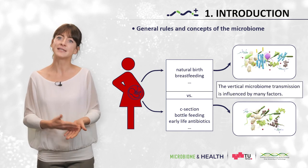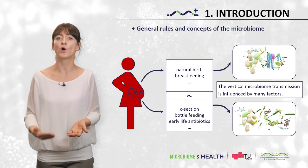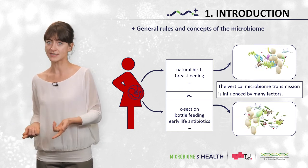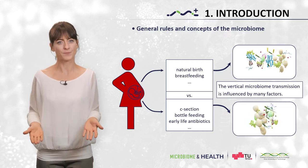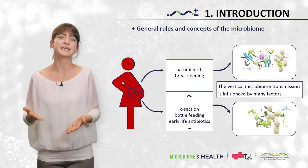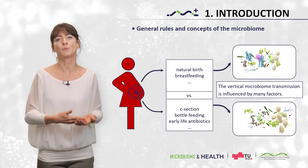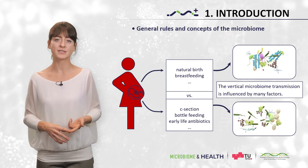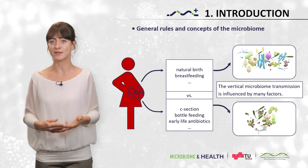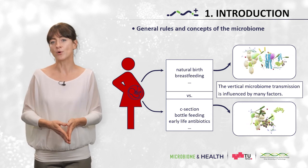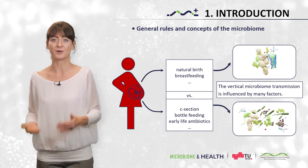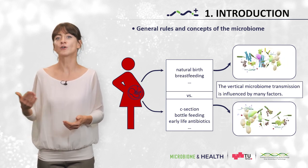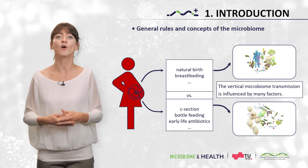For example, vaginally delivered infants acquired bacterial communities resembling their own mother's vaginal microbiota, while C-section infants harbored bacterial communities similar to those found on the skin surface. Differences in the delivery mode have been linked to differences in the intestinal microbiota of babies. Mutualistic relationships with intestinal bacteria are known to influence energy balance, pathogen colonization resistance, and the maturation of the intestine and the immune system. Delivery mode may lead to differences in the microbiota's development, which may then contribute to variations in normal physiology or to disease predisposition.